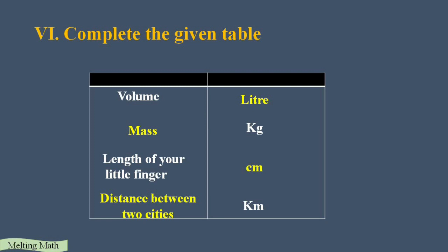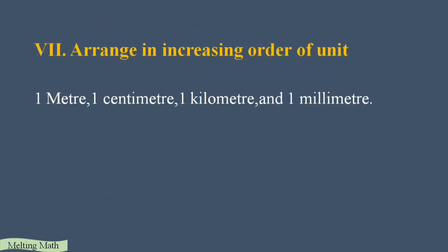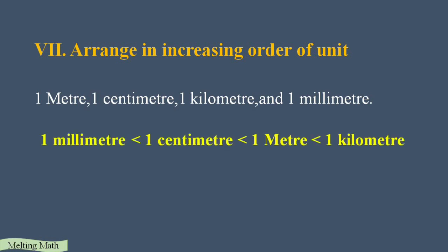Next question: arrange the following in increasing order of units. Increasing order means from lowest to highest. Millimeter is the lowest, then centimeter, then meter, then kilometer. So the correct order is: 1 millimeter is less than 1 centimeter is less than 1 meter is less than 1 kilometer.